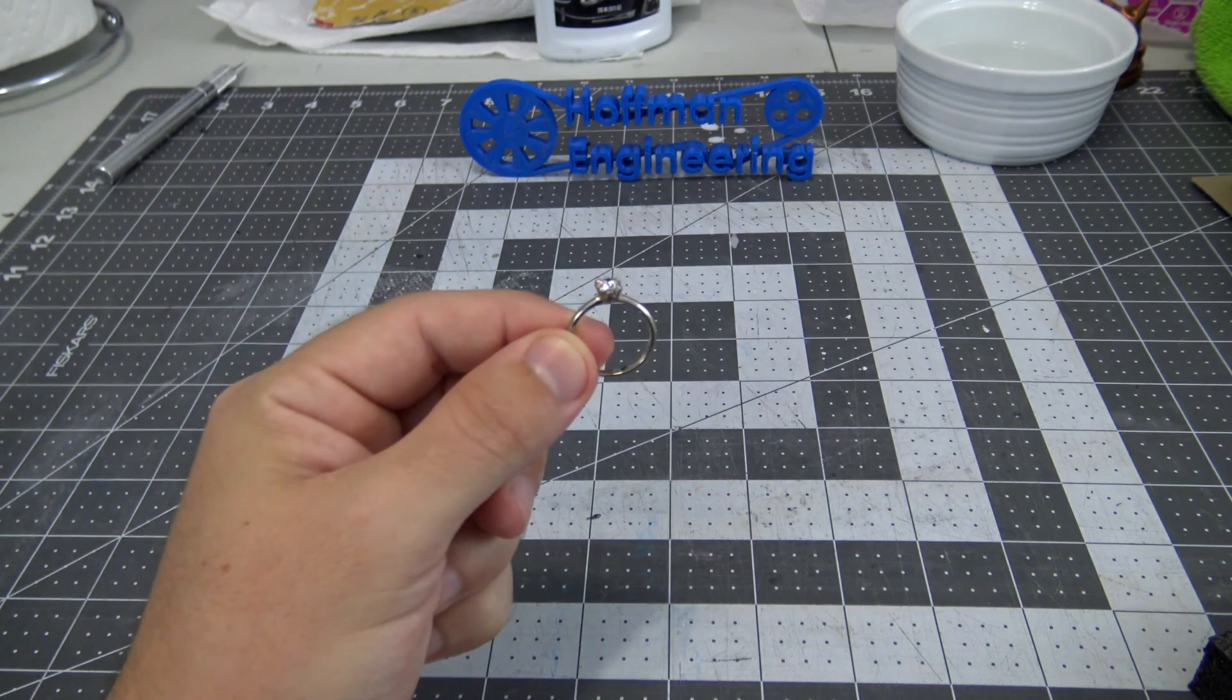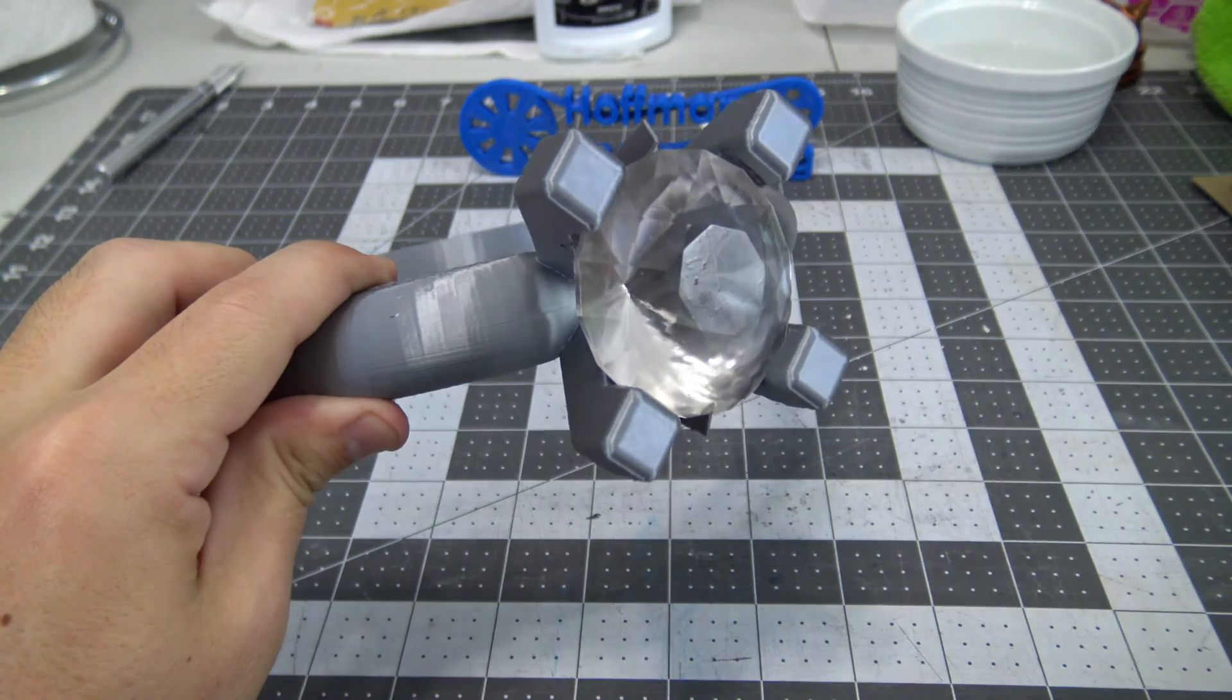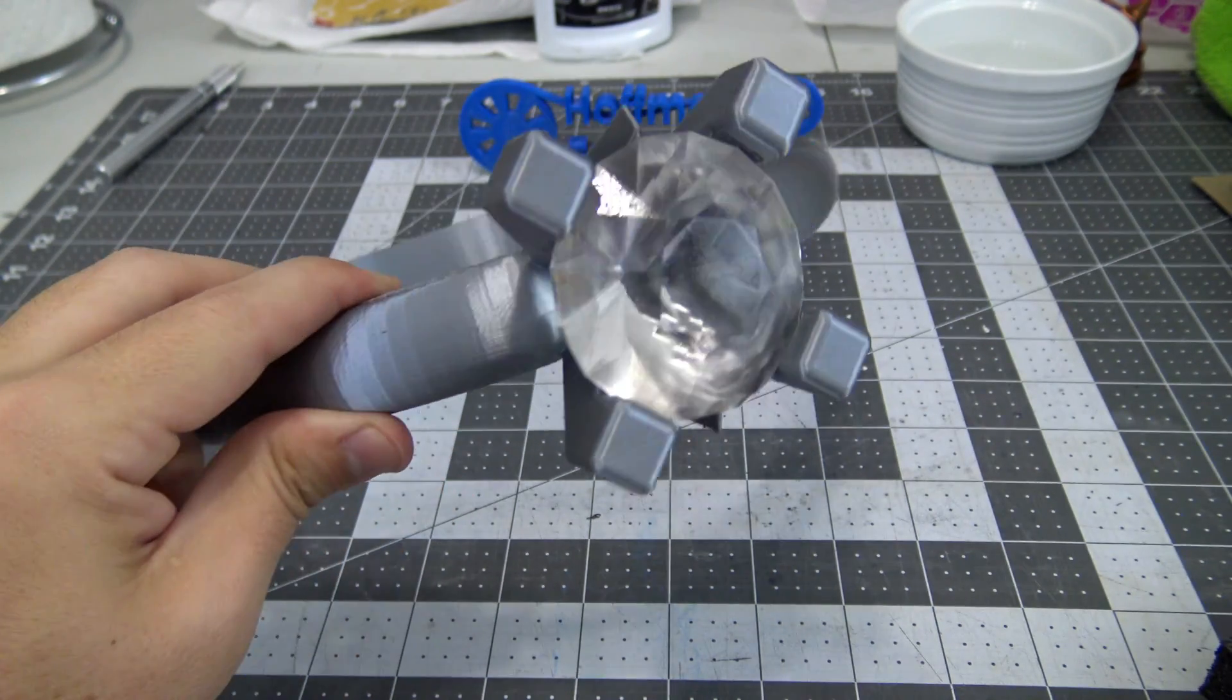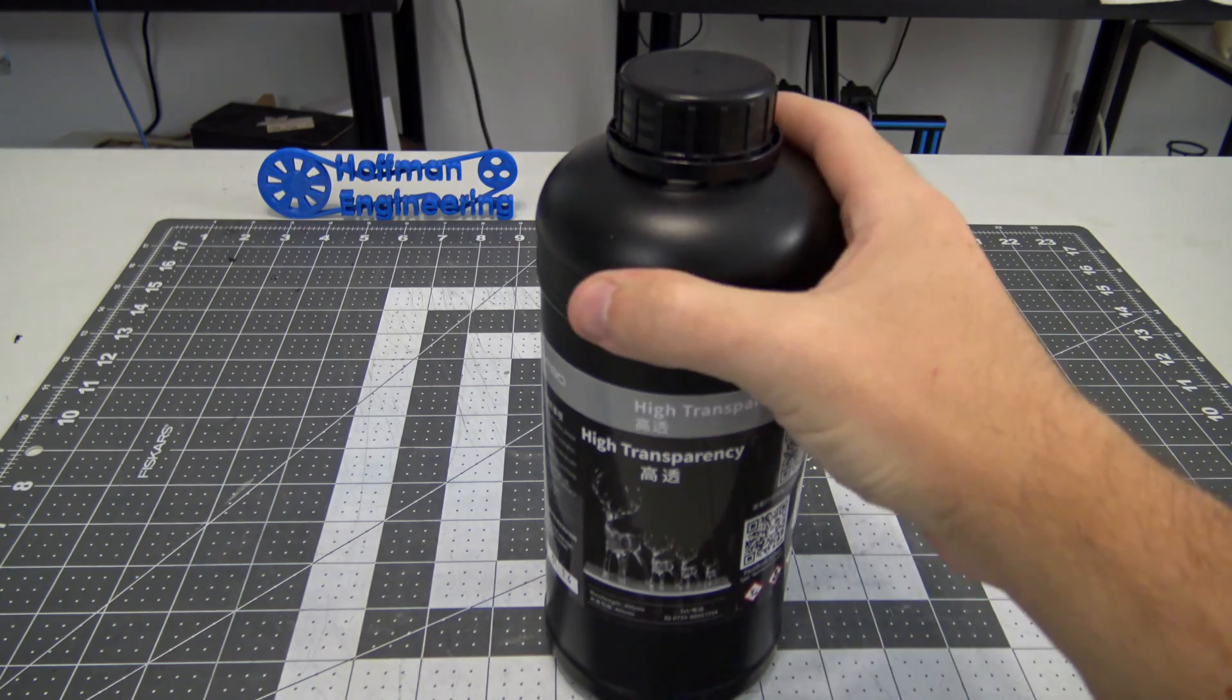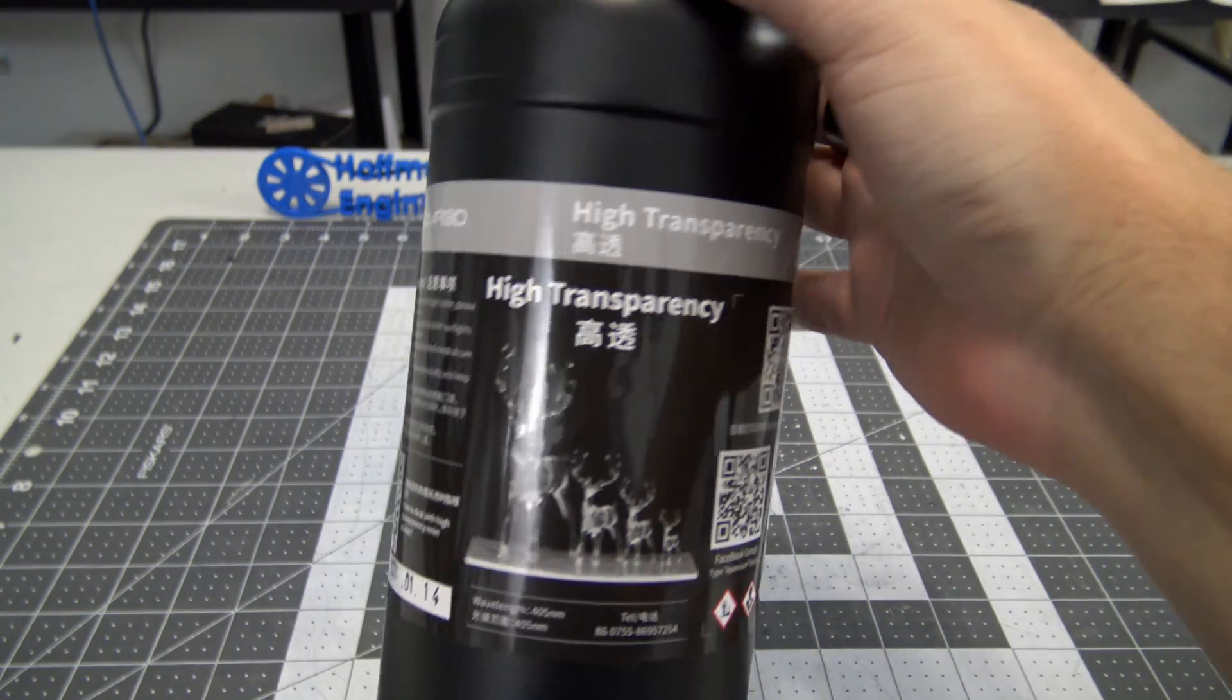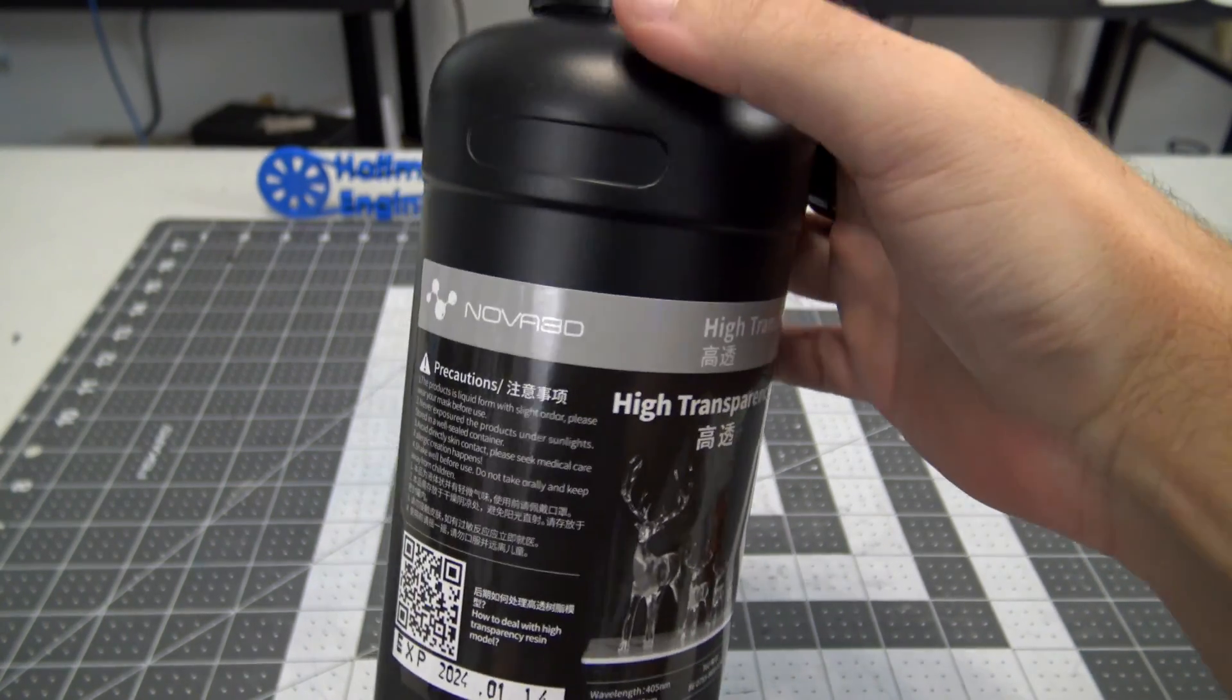Today's video is going to be about this. Wait, that's a little small. Let's make it bigger. There we go. That's more like it. Hey everyone and welcome back to Hoffman Engineering. Today we're going to explore the world of crystal clear 3D printing using high transparency resin from Nova 3D.